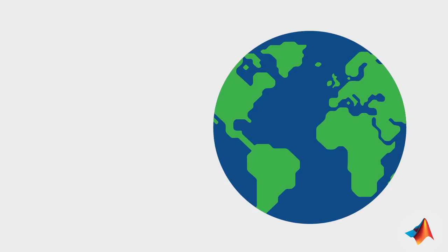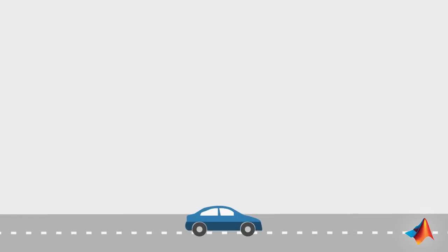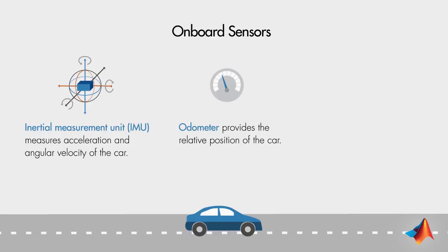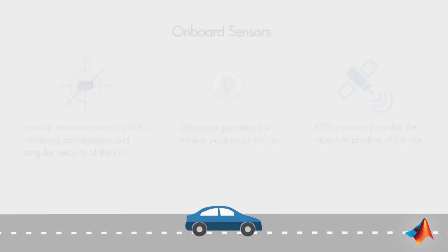You have guests visiting from overseas and you need to pick them up from the airport. You're using your car's navigation system. Let's look at the sensors you have on board which help you find your position and navigate to the airport. The inertial measurement unit uses accelerometers and gyroscopes to measure the car's acceleration and angular velocity. The odometer measures the relative distance traveled by the car. The GPS receiver receives signals from satellites to locate the car on Earth's surface.